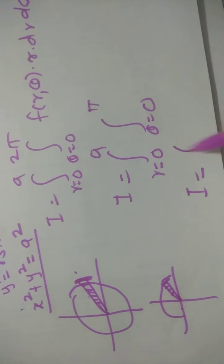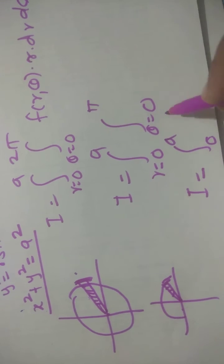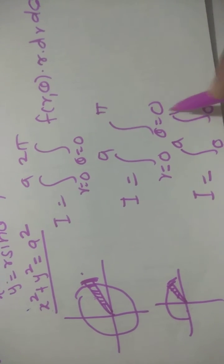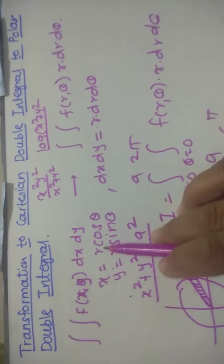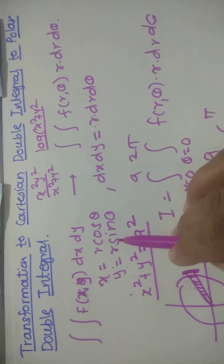Now you have the part of circle in only the first quadrant. So r varies from 0 to a and theta varies from 0 to pi by 2. So in this way, by substituting x equal to r cos theta, y equal to r sin theta.